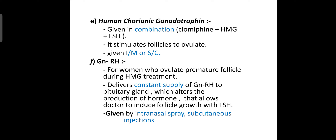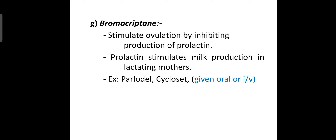GnRH analogues are used for women who overproduce premature follicles during hMG hormonal treatment. GnRH delivers a constant supply of hormone to the pituitary gland, which alters hormone production and allows doctors to induce follicle growth with FSH; it is given by nasal spray or subcutaneous injection. Bromocriptine stimulates ovulation by inhibiting the production of prolactin, which stimulates milk production in lactating mothers; examples include Parlodel. It is given orally or intravenously.